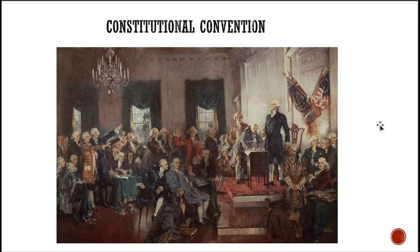They said, you know what, we just need a whole new form of government. So each of the 13 states sent delegates — people to represent them — to the Constitutional Convention, and they debated for days in secret about how to create this new form of government. They actually created something that lasted up until this day. But keep in mind, if you look at the picture, that does not look much like America today. These men were making decisions for women, for Native Americans, for Black slaves — people that are not pictured here.